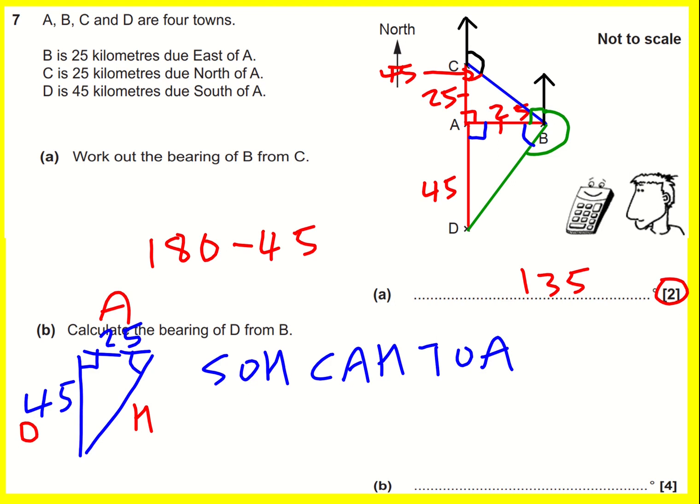So what do I need to use? I'm going to be using TOA. And I can write down the tan. Let's call it X. Tan X is going to be opposite divided by adjacent.